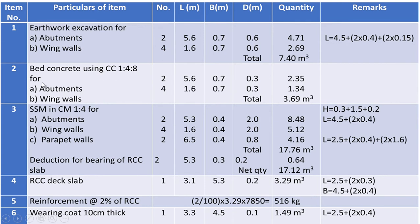Item number two: bed concrete using CC 1:4:8 for abutments and wing walls. Bed concrete is provided for the full dimensions of length and breadth of excavation, so the length and breadth of bed concrete is always the same as that of excavation. Thickness of bed concrete is 0.3 meters. Quantity of bed concrete for abutments is 2.35 cubic meters and for wing walls is 1.34 cubic meters, giving a total quantity of 3.69 cubic meters.